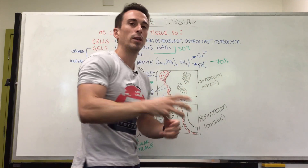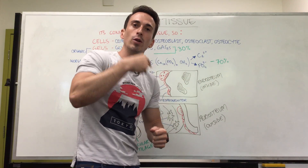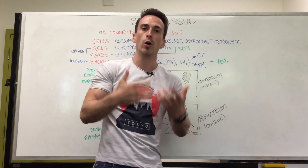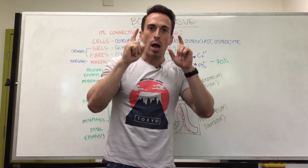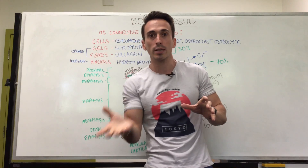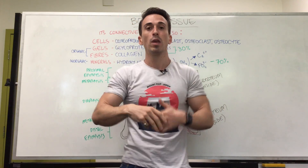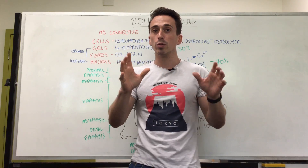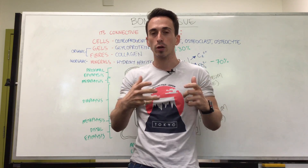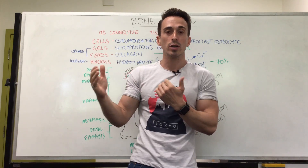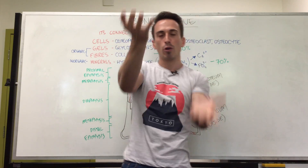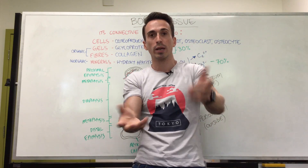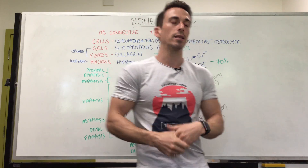Osteoclasts — think of 'clast' as meaning crushing — these break bone down. And the last one is the osteocyte, that's the mature osteoblast, the mature bone cell. Now, bone is constantly being remodeled — constantly building itself up and breaking itself down. The more you use bone, the more this remodeling process occurs, and the more the building process occurs to make the bone stronger. Osteoporosis is a disease in which this remodeling process of building and breaking is imbalanced — you have more breaking and less building, and you get holes in your bones.